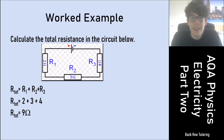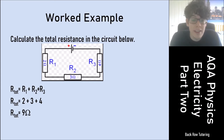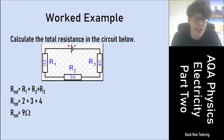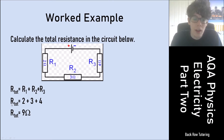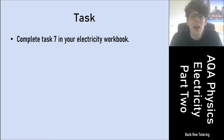Here's a worked example: calculate the total resistance in a circuit with three series resistors. Applying R_total = R1 + R2 + R3, with values of 2 ohms, 3 ohms, and 4 ohms: R_total = 2 + 3 + 4 = 9 ohms. Complete task seven in your electricity workbook if you are following along.